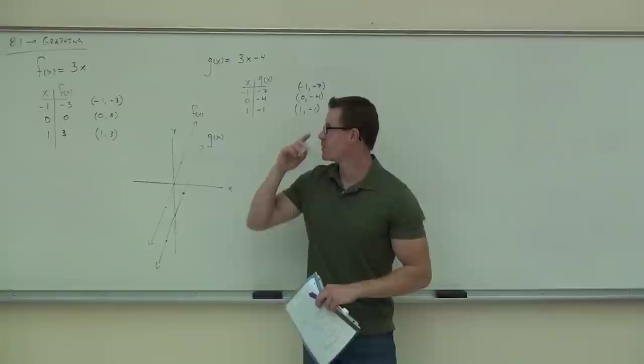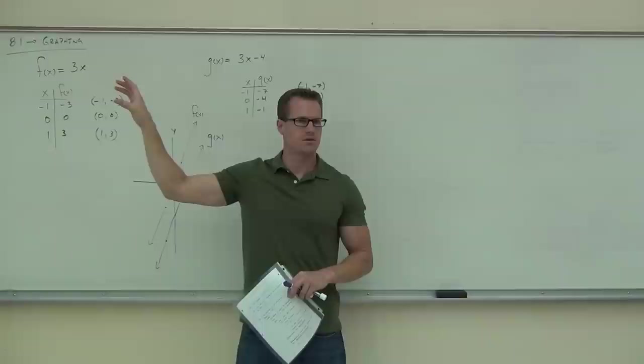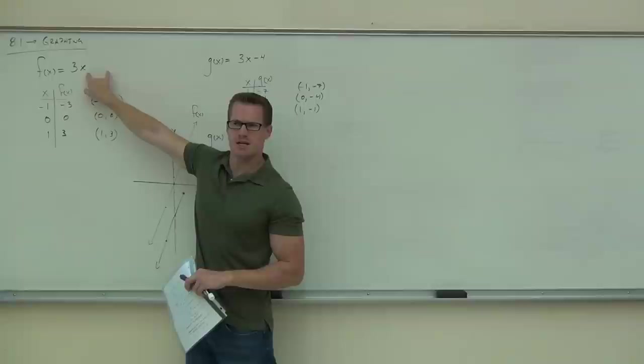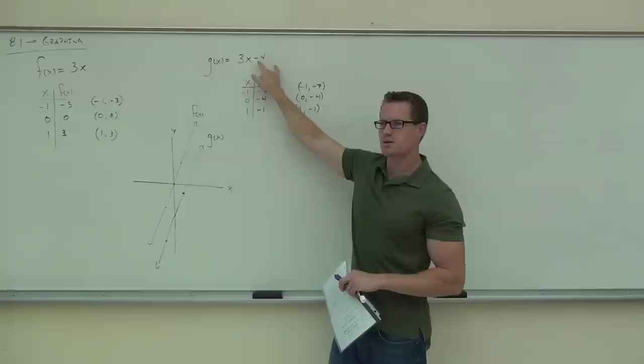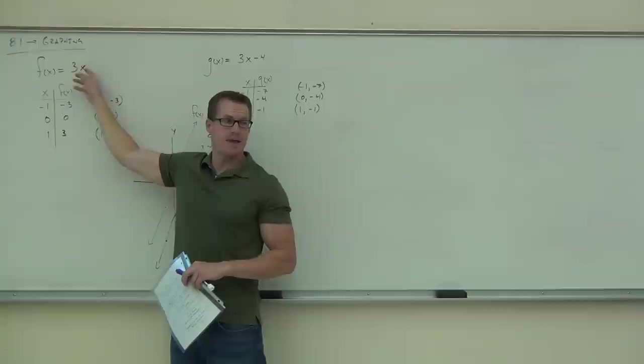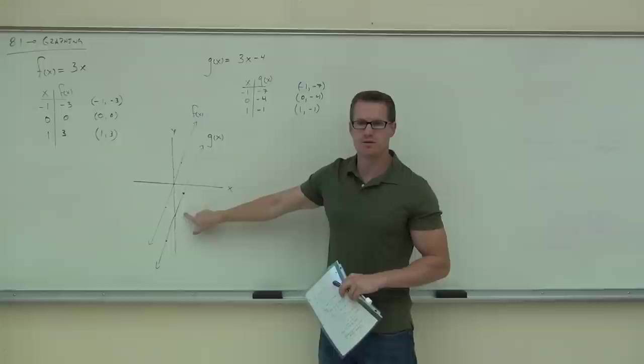Do you see the similarities? Look at where these things cross. This has minus four — where does it cross on the y? That will always give you your y-intercept right there. Notice how this has zero — this doesn't have anything added or subtracted to it — that's going to cross at y equals zero. And minus four crosses at negative four.